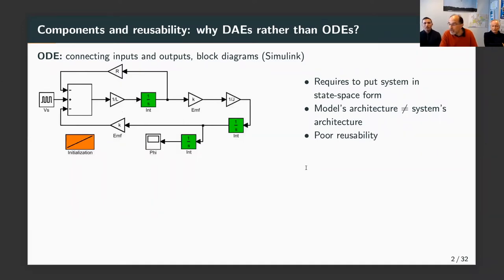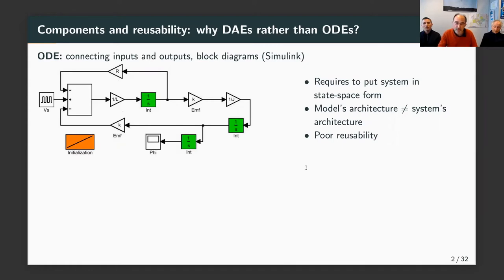You all know the Simulink language, and in a Simulink model of some physical system, you can immediately see that the organic architecture of the physical device is not apparent. This comes from the fact that in order to model physical systems using ordinary differential equations, you have to put the system into a state-space form, which completely changes the mathematical structure of your model. This is a big problem in terms of reusability of models of physical systems.